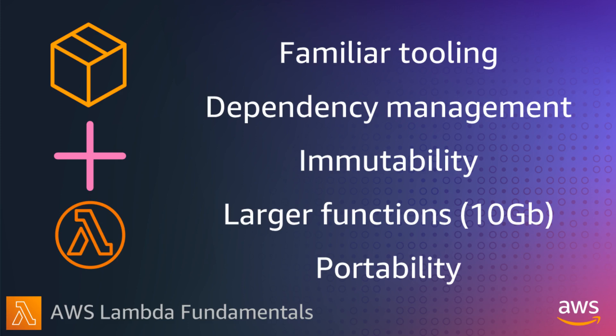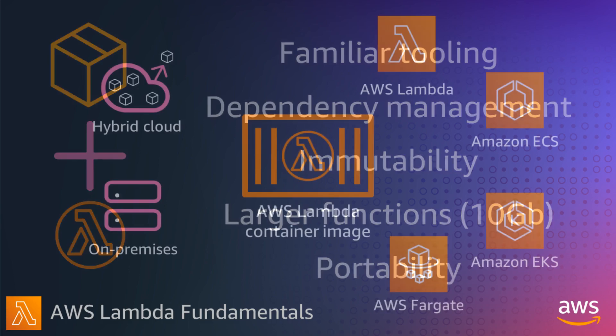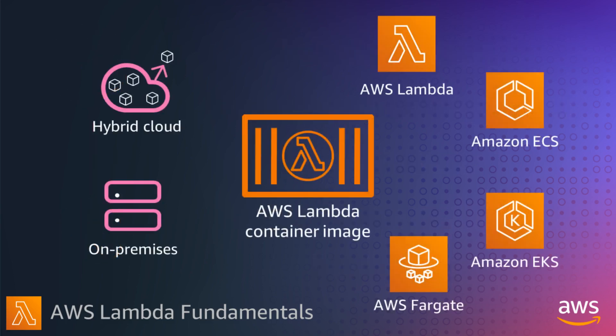You can run larger workloads on Lambda as the deployment package size is now 10GB for container images. We optimize and cache the loading of the images to reduce cold starts. And with portability, you can more easily run the same code packaged as a container image in many locations: Lambda, ECS, EKS, or on-prem.